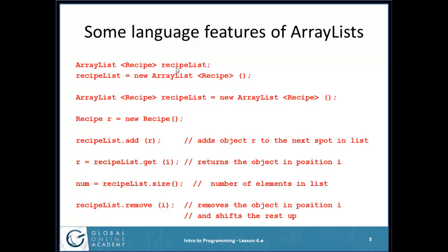I still can't use recipeList until I create it with the new keyword. Here's where I instantiate it: recipeList equals new ArrayList<Recipe>() — calling the constructor for the class ArrayList. I didn't have to write the constructor; Java did that for me. The ArrayList constructor doesn't take any parameters. Or I could combine these two statements into one: ArrayList<Recipe> recipeList = new ArrayList<Recipe>().